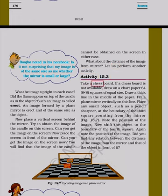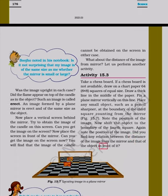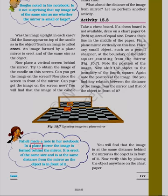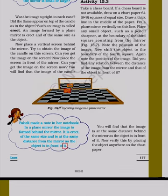Activity 15.3: Take a chess board. If a chess board is not available, draw on a chart paper 64 squares (8x8) of equal size. Draw a thick line in the middle of the paper. Fix a plain mirror vertically on this line. Place any small object such as a pencil sharpener at the boundary of the third square counting from the mirror. Note the position of the image. Now shift the object to the boundary of the fourth square. Again note the position of the image. Did you find any relation between the distance of the image from the mirror and that of the object in front of it? In a plain mirror the image is formed behind the mirror. It is erect, of the same size, and is at the same distance from the mirror as the object is in front of it.